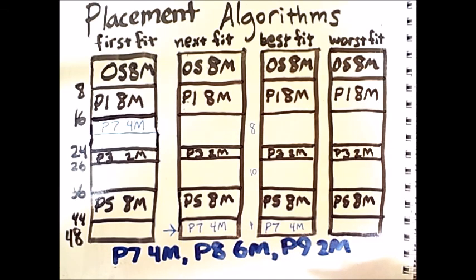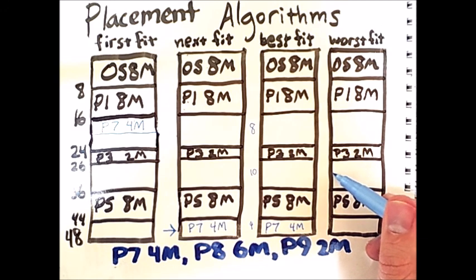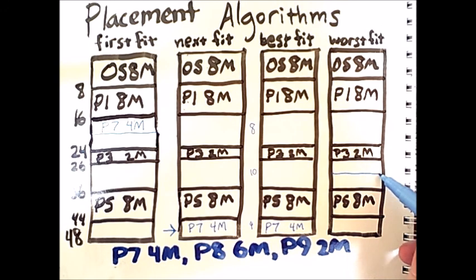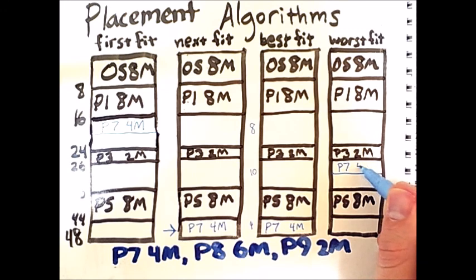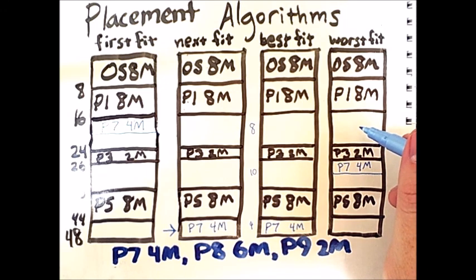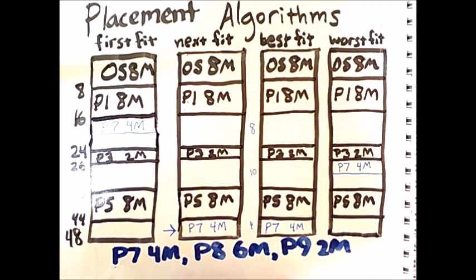In contrast, the worst fit for process 7 is right here, because 10 minus 4 leaves a whole 6 free megabytes. This is more unused space than the 0 or 4 unused megabytes that would have been left if we had placed process 7 here or here.